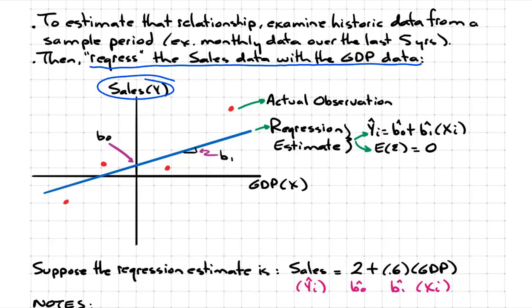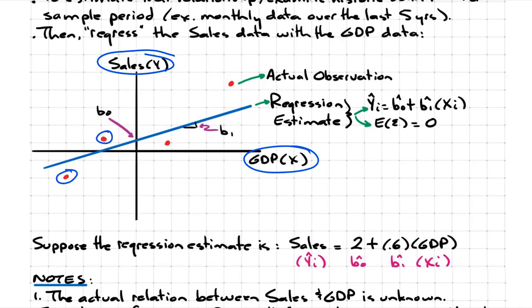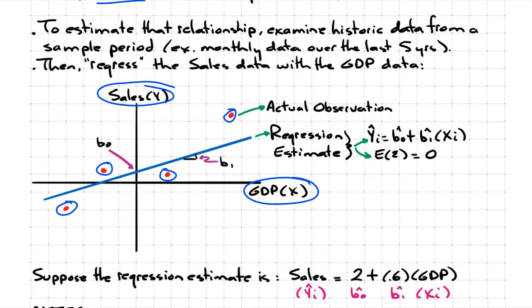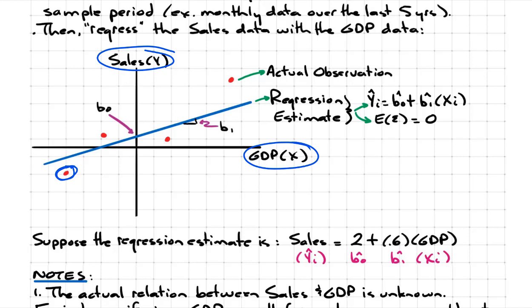Here's sales, the dependent variable, and here's GDP, the independent variable. Each red dot here represents an actual observation. In our example we're using 60 monthly observations, but just for simplicity we're going to have four observations here — it'll be the same if you had 60. Each dot tells you what sales and GDP were for a particular month. For example, this dot tells you that for that particular month, sales was here while GDP was there.